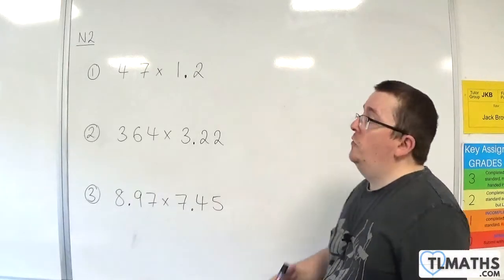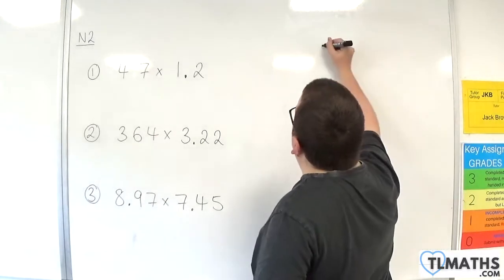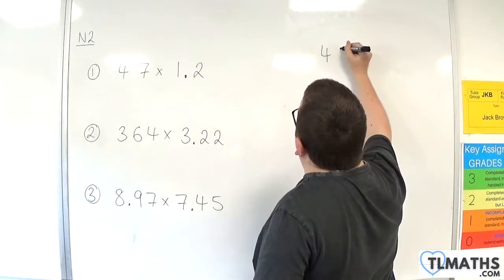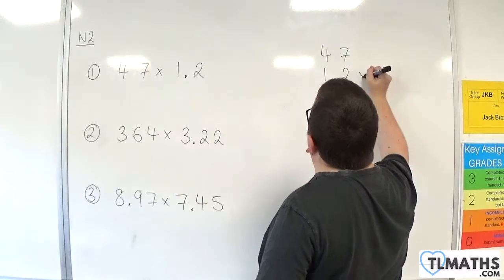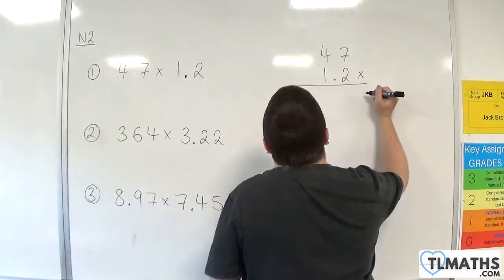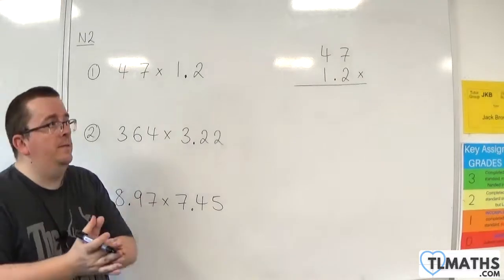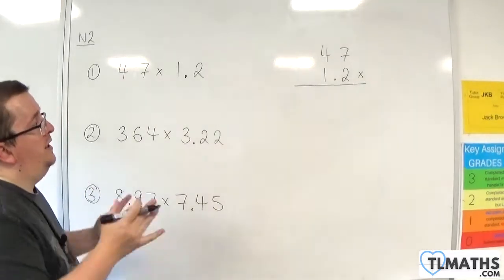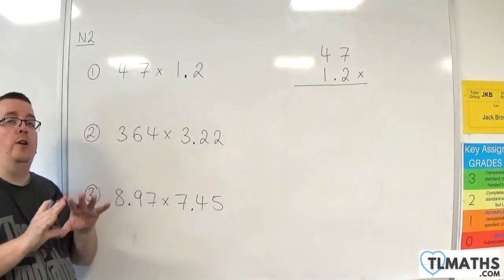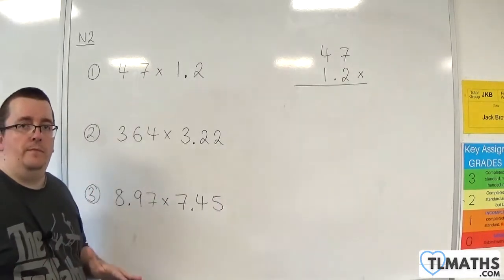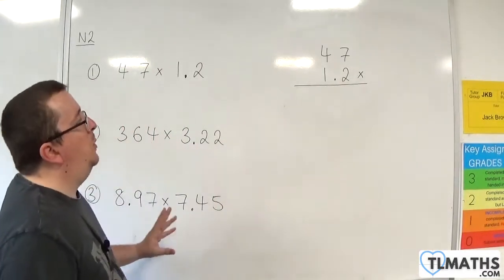In this video I want to go through three more examples of multiplying with decimals. We'll start with 47 times 1.2. Notice how I'm not lining up the decimal point here, or the units column. Essentially I am ignoring that the decimal point is there. So imagine that it's 47 times 12.